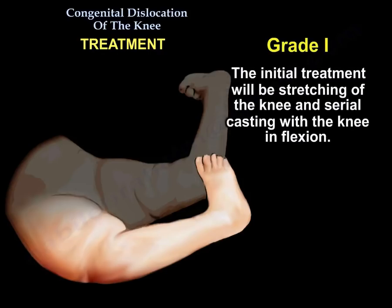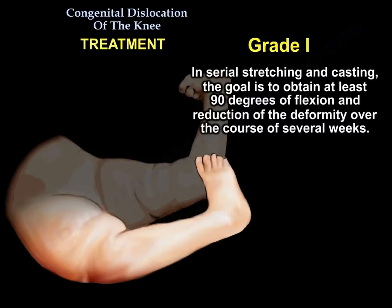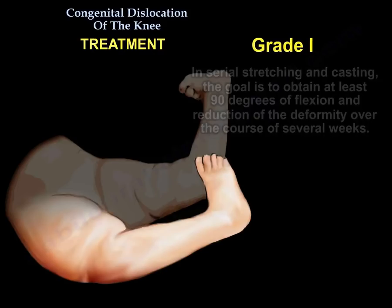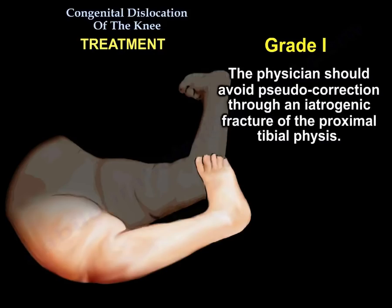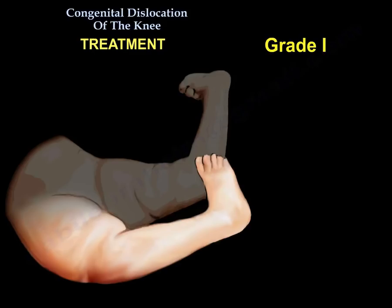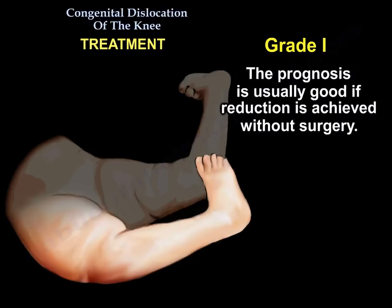For grade one, the initial treatment is stretching of the knee and serial casting with the knee in flexion. The goal is to obtain at least 90 degrees of flexion and reduction of the deformity over many weeks. The physician should avoid pseudo-correction through an iatrogenic fracture of the proximal tibial physis. The prognosis is usually good if reduction is achieved without surgery.